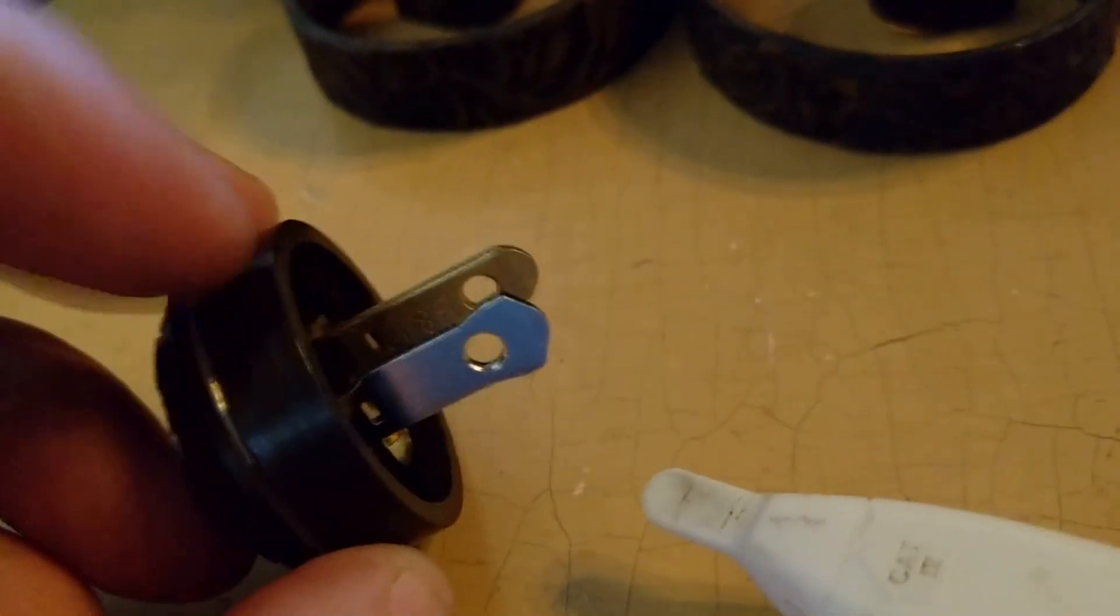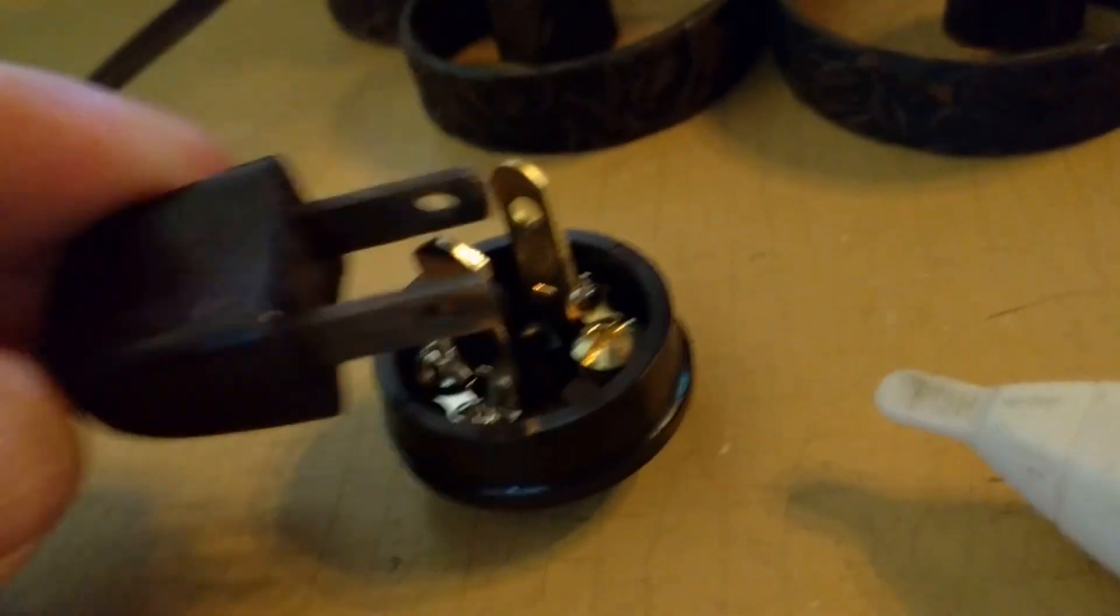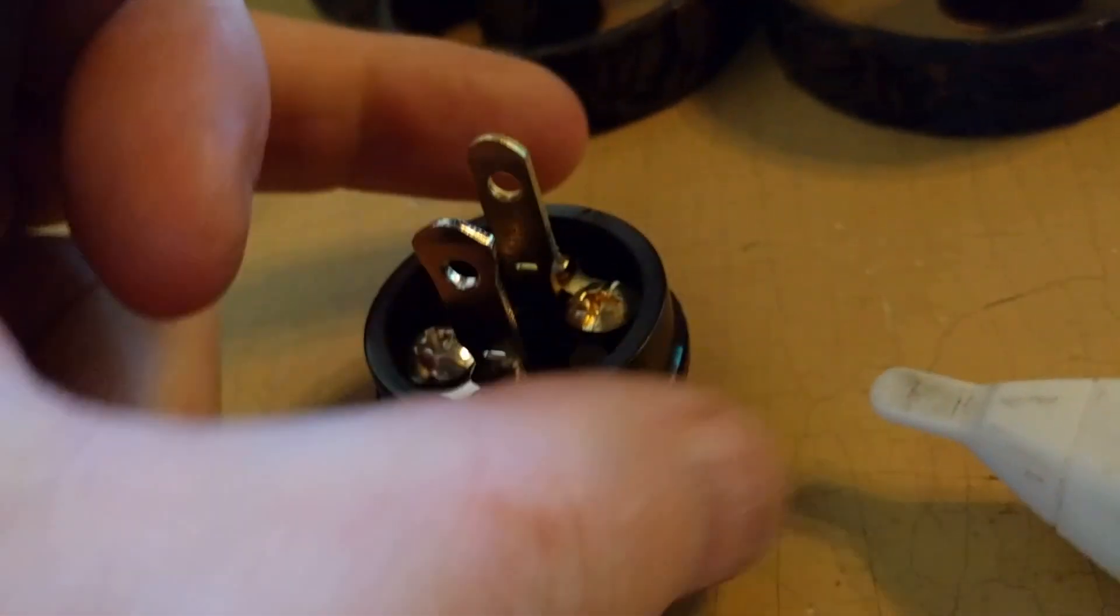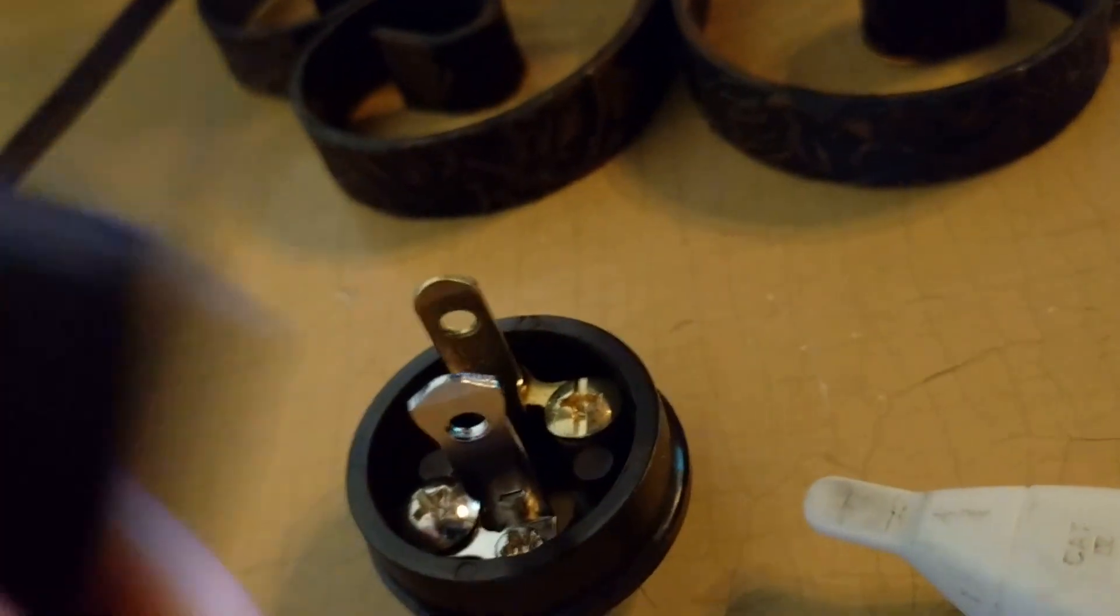This is a polarized plug. This is an unpolarized plug. The difference, of course, is that the polarized plug has a wider blade and can only be inserted one way. An unpolarized plug can be inserted in either direction.